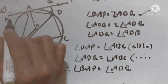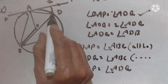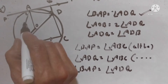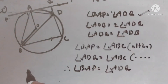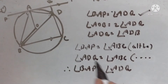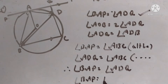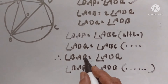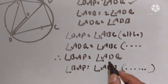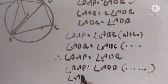Now, angle BAP is equal to angle ADB. Why? Angles in the alternate segment. So, things which are equal to the same thing are equal to one another. Therefore, angle ADQ is equal to angle ADB. This is proved.